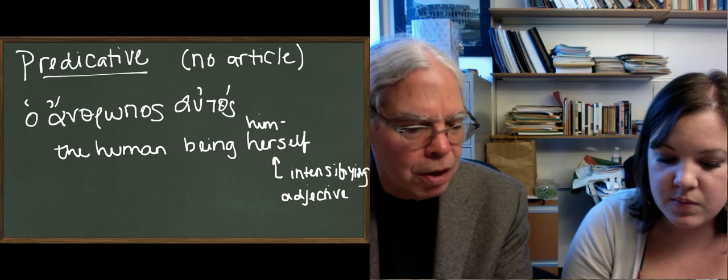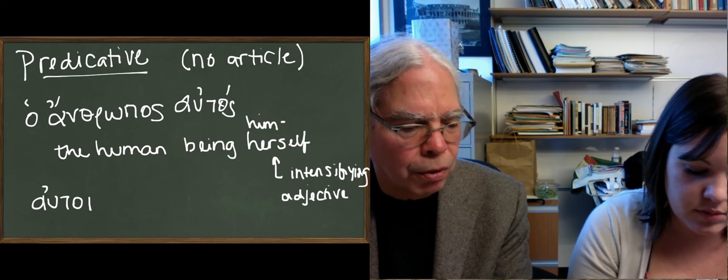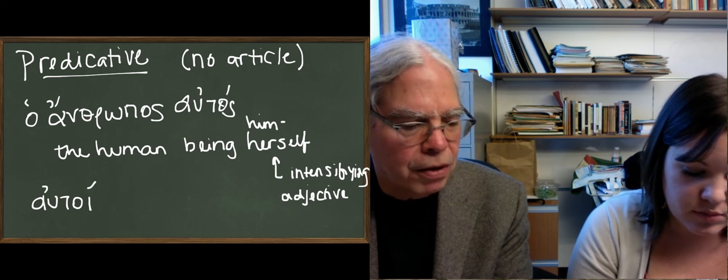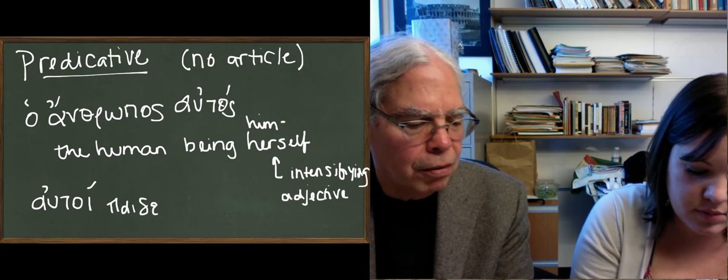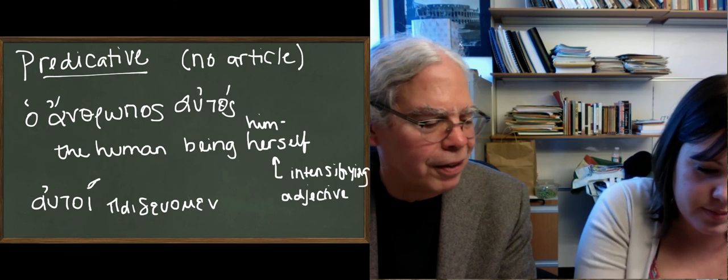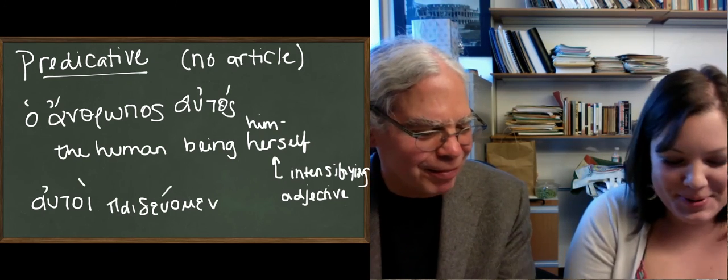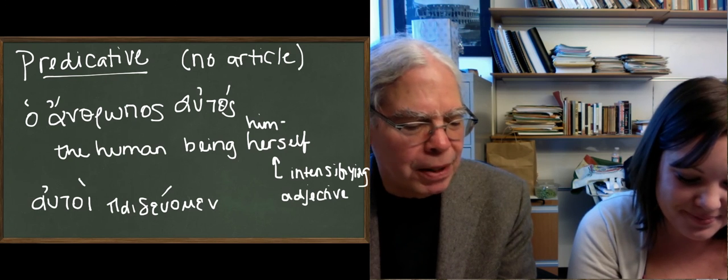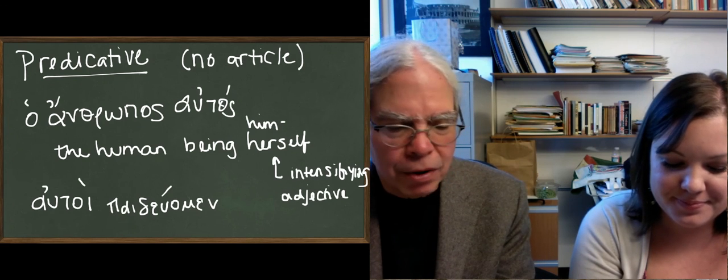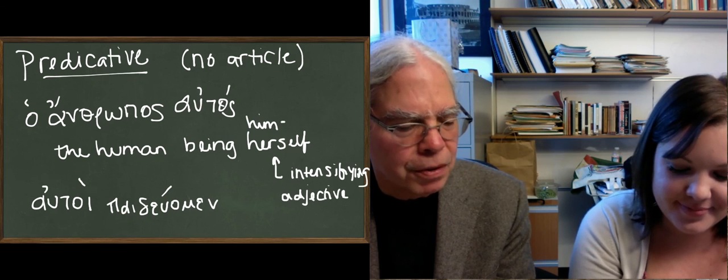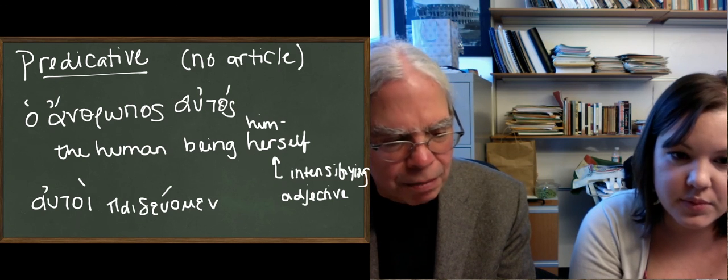So for example, if you have autoi, the nominative plural form of autos, agreeing with the subject of a sentence, like that's first person plural, it means we, ourselves, do this. If we say autoi paideuomen, first person plural. If it's autoi with paideuomen, it means we, ourselves, are teaching. So it could be ourselves, yourselves, themselves. All different persons. So it's a very different thing from the pronoun and from the adjective that means same. That's it.